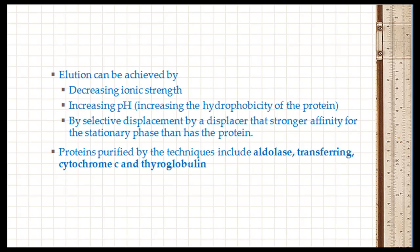Elution in hydrophobic chromatography can be achieved by decreasing ionic strength, increasing pH, or by selective displacement using a displacer with stronger affinity for the stationary phase than the protein. A practical challenge with this technique is its non-predictability — it works well for some proteins but not others. Hence, optimization is important when performing hydrophobic interaction chromatography. Proteins purified by this technique include aldolase, transferrin, cytochrome C, and thyroglobulin, though any protein can potentially be purified with appropriate optimization.